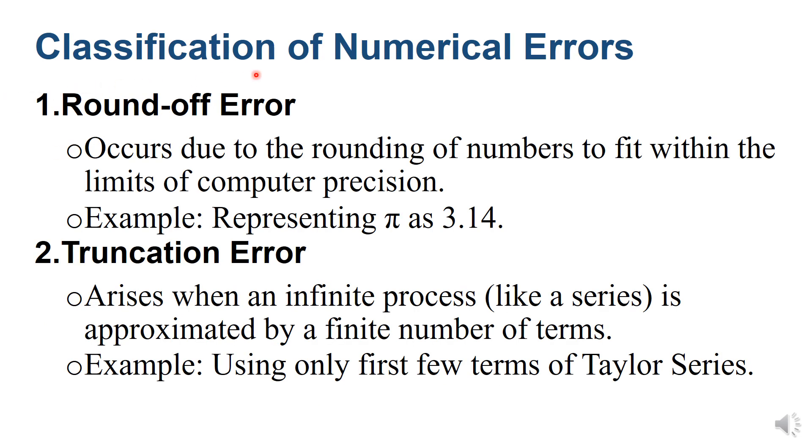Classification of Numerical Errors. Point 1, Round-off Error occurs due to the rounding of numbers to fit within the limits of computer precision. Example, Pi represented as 3.14.